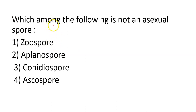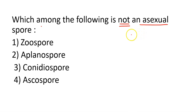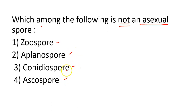Next question: which among the following is not an asexual spore? We are looking for the one that is a sexual spore, not asexual. Four options: zoospore, aplanospore, conidiospore, and ascospore.